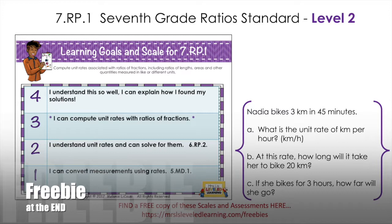At level two, students should understand unit rates and solve for them. You want to make sure they know what a unit rate is — what is the key word, the clue, in story problems that tells them they're working with a unit rate? For example: Nadia bikes 3 kilometers in 45 minutes. What is the unit rate of kilometers per hour? We know that 'per hour' is the clue that the unit rate denominator will be one unit — per hour means one hour. Make sure students can identify the difference: three kilometers in 45 minutes is a rate, but not a unit rate, because the denominator is not one minute or one hour.